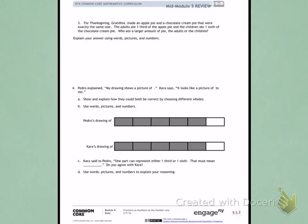This is Module 5, Mid-Module Review, Side 2, Number 3. For Thanksgiving, Grandma made an apple pie and a chocolate cream pie that were exactly the same size. The adults ate one-third of the apple pie,